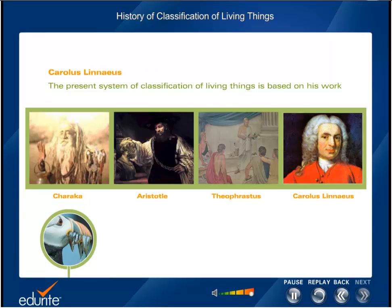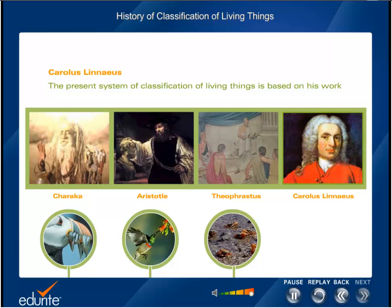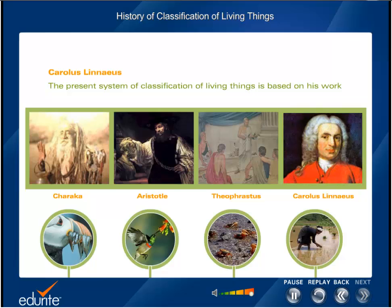The present system of classification of living things is largely based on the work of a famous Swedish biologist, Carolus Linnaeus. He classified all living things known at that time based on their true structure. It was Linnaeus who identified that the whale is a mammal even though it lives in water and looks like a fish. He also identified that apes are closer to man than to monkeys.